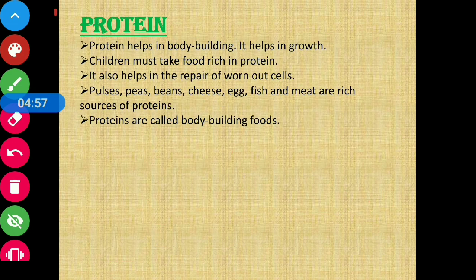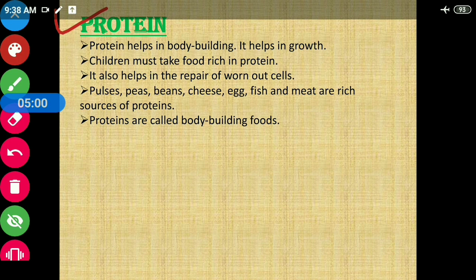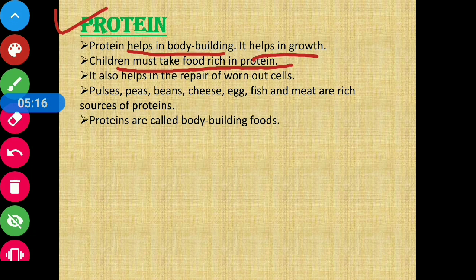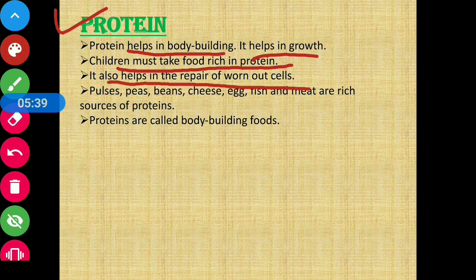Next we will discuss protein. Protein helps in body building and growth. Children must take food rich in protein because children are in their growing stage. Since protein helps in growth, children should eat more protein-rich food so that they grow properly. Protein also helps in the repair of worn-out cells.